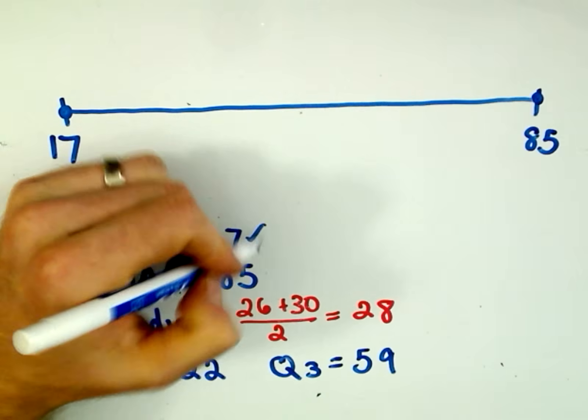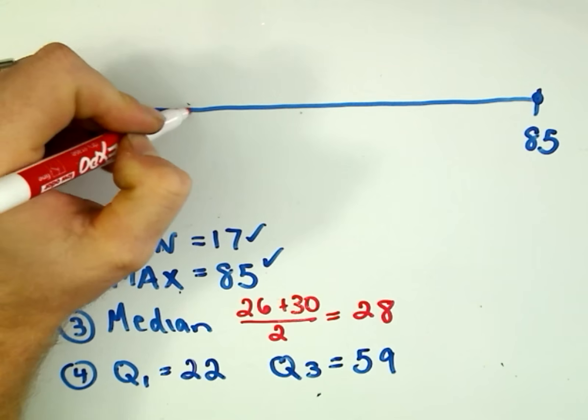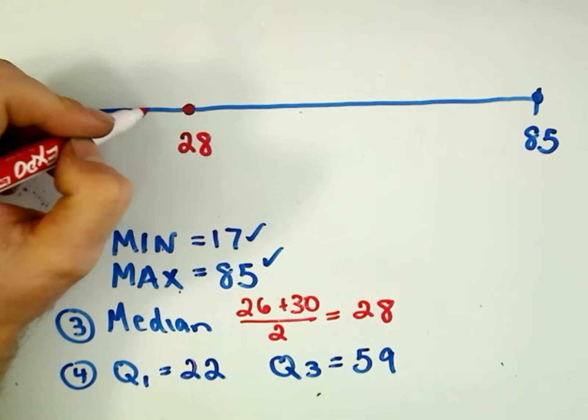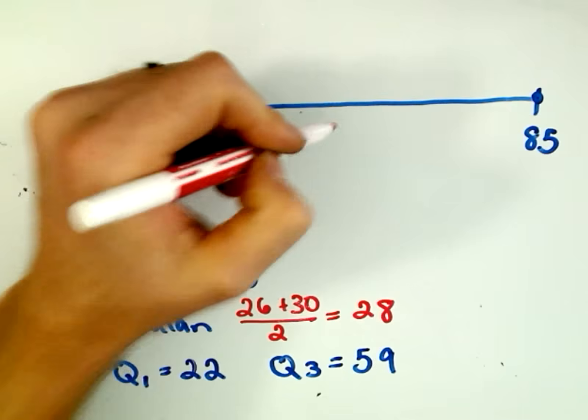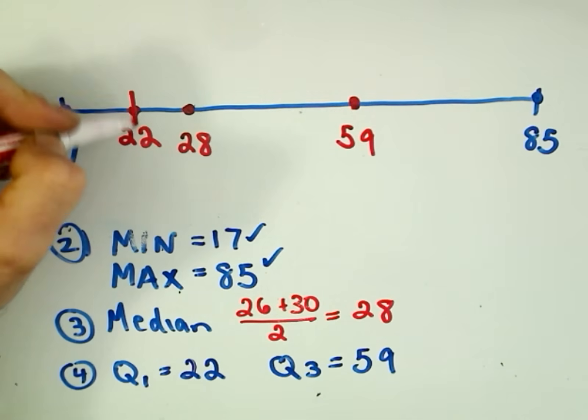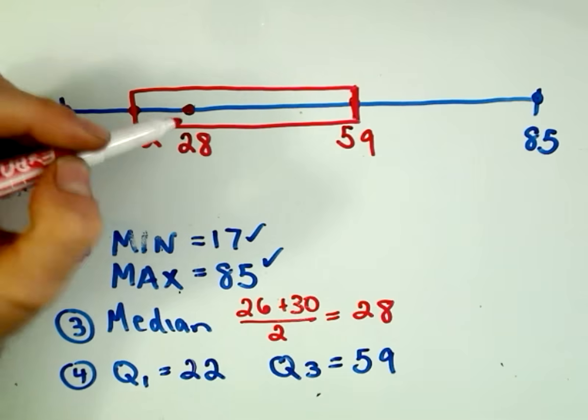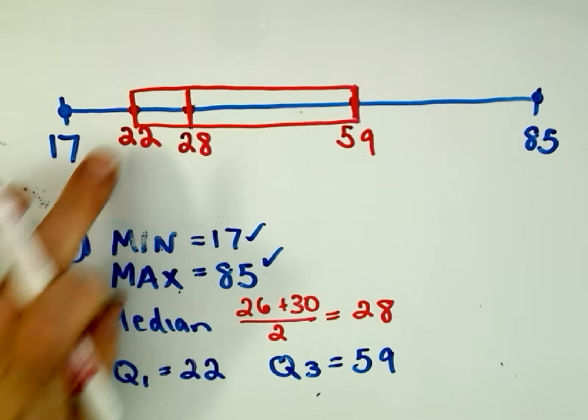Okay, our median is going to be at 28, so I'm going to put a dot at 28. So 28 wouldn't be too far up, I don't guess, so we'll put 28 right there. Our Q1 value is going to be at 22, so it'll be a little bit smaller. And then our Q3 value is going to be up here at 59, so we'll stick it a little bit out there. These become the ends of our box. Okay, and then we make the line up and down at our median value. So this is now our box and whisker plot.